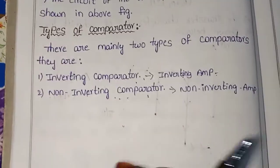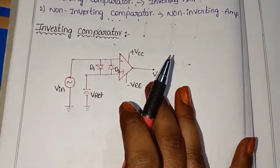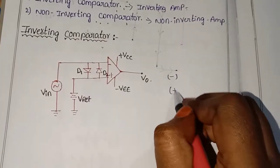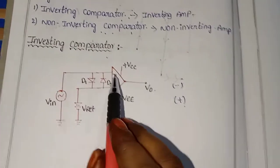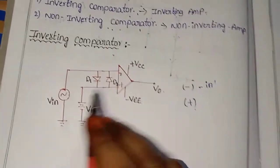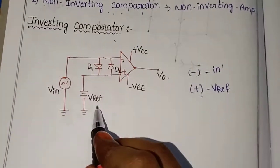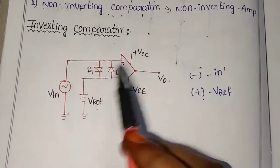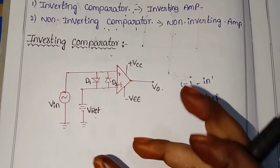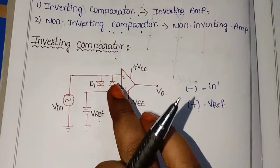Now I'm going to show you the working. This is a circuit diagram of the inverting comparator. The negative sign terminal is the inverting terminal, and the positive sign terminal is the non-inverting terminal. Diodes D1 and D2 are used to protect the amplifier circuit from damage due to high input voltage.